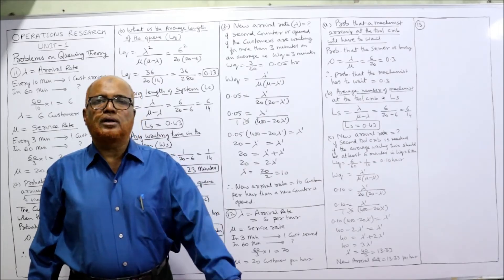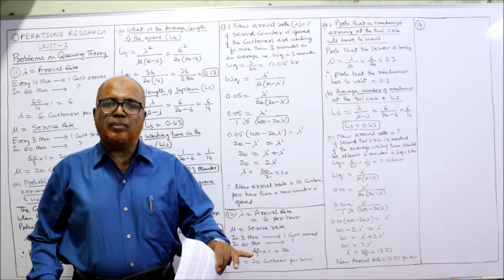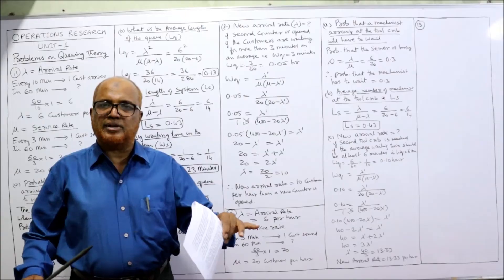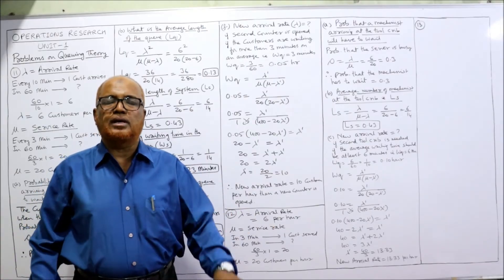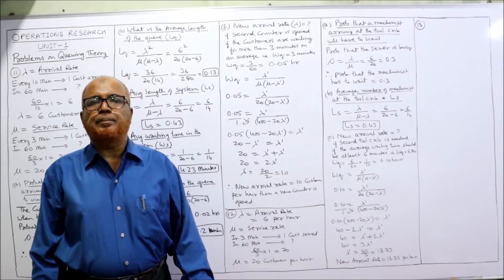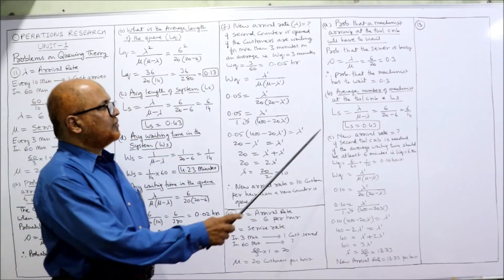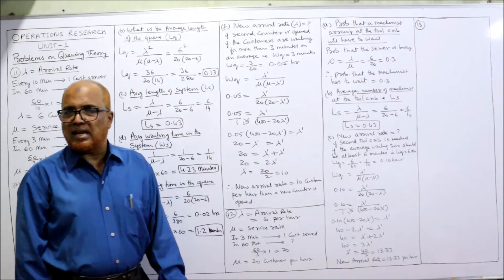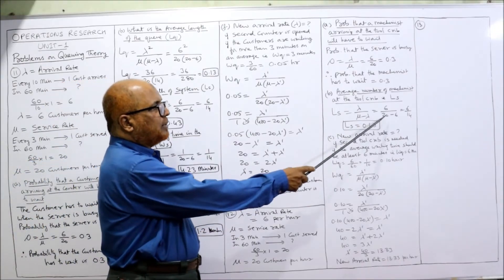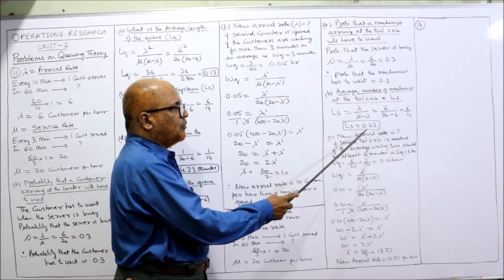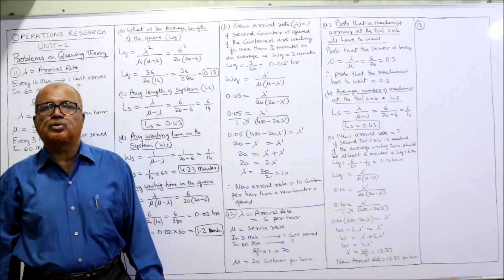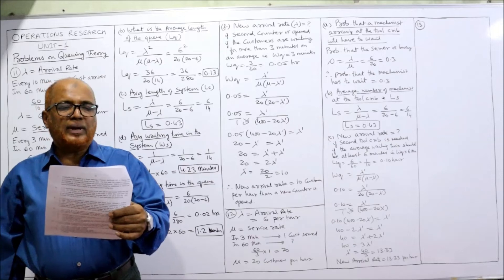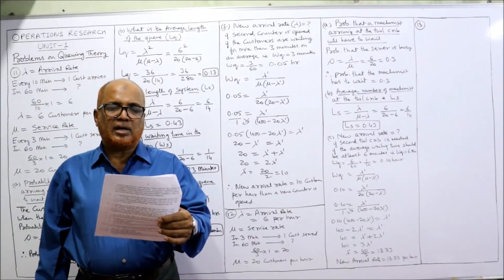Second part: what is the average number of machinists at the tool crib? Average number of customers in the whole system means LS. The formula is lambda divided by (mu minus lambda): 6 divided by (20 minus 6) equals 6 divided by 14, so LS equals approximately 0.43.